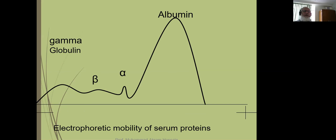This shows the electrophoretic mobility of serum proteins. Usually the gamma-globulin portion is not that large, but when an antigen is introduced into the body, the gamma-globulin fraction becomes much higher.